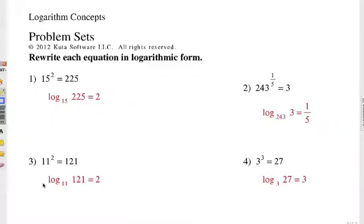Number three: 11 squared equals 121. What's the base? 11, so it's log base 11. What's the answer? 121. So log base 11 of 121 - 11 to the what power is 121? The answer is 2. The log is the exponent. Next, 3 to the third is 27, so the base is 3. 3 to the what power is 27? 3. It just takes thinking backwards a little bit.